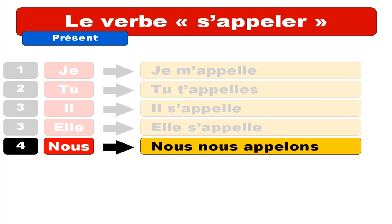And then for nous — some of my students find it quite strange, but that's the form for this verbe pronominal: you've got to repeat nous again. So you get nous nous appelons. Keep in mind, for this form you've got only one 'l.' If you compare it to je, tu, il, elle — for nous, there is only one 'l.' Nous nous appelons. You can notice that the pronunciation is a bit different for the verb: it's appelons, because there is only one 'l' there. Nous nous appelons.